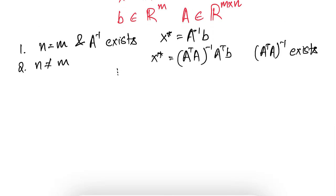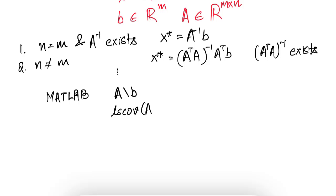The least squares problem is a well-studied problem. For example, if you use MATLAB software, you can solve the least squares problem with the command A backslash b, or alternatively using lscov(A, b). Both commands can be used to solve the least squares problem. Similarly, very basic commands are available in all other scripting languages like Python as well.